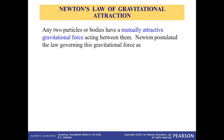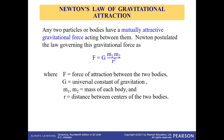Newton's law of gravitational attraction: any two particles or bodies have a mutually attractive gravitational force acting between them. The force F is the force of attraction between two bodies, G is the universal constant of gravitation, M1 and M2 are the masses of the bodies, and R is the distance between the centers of the two bodies.